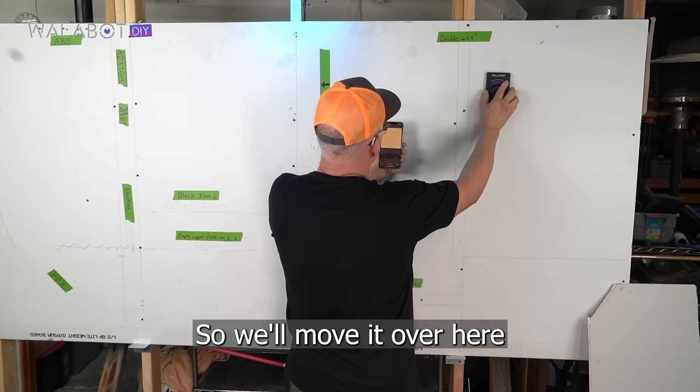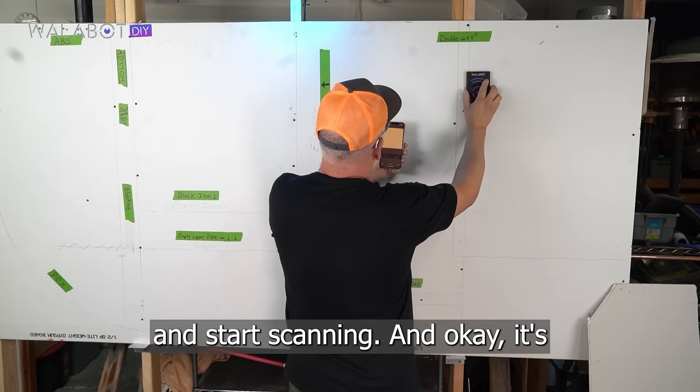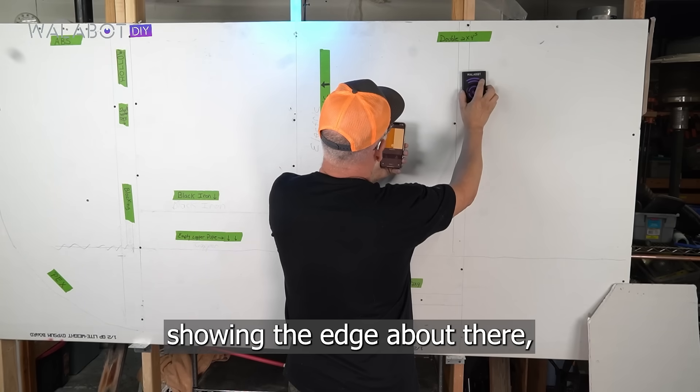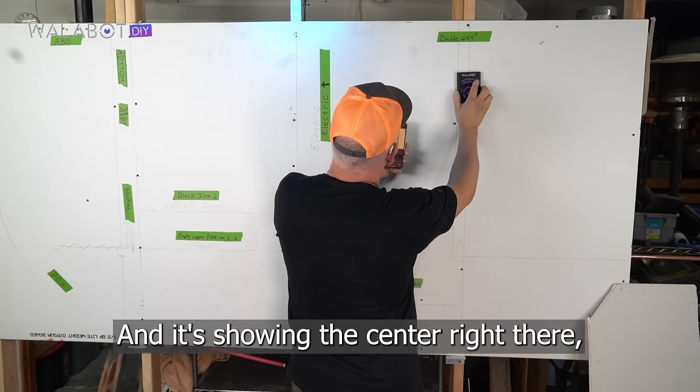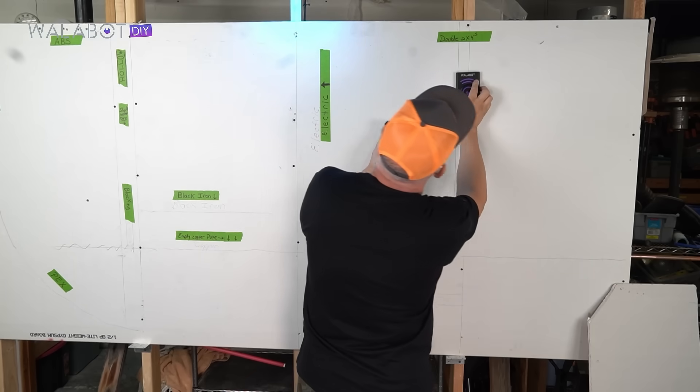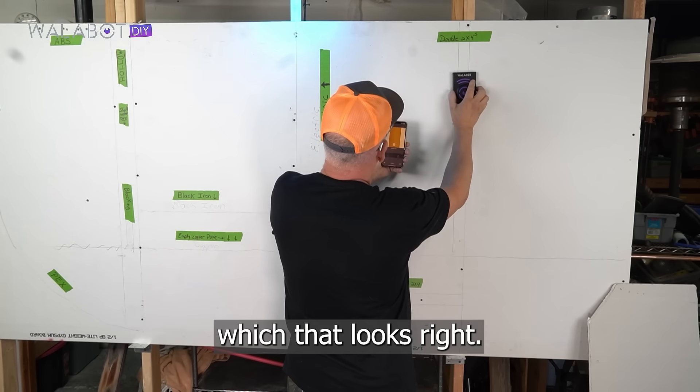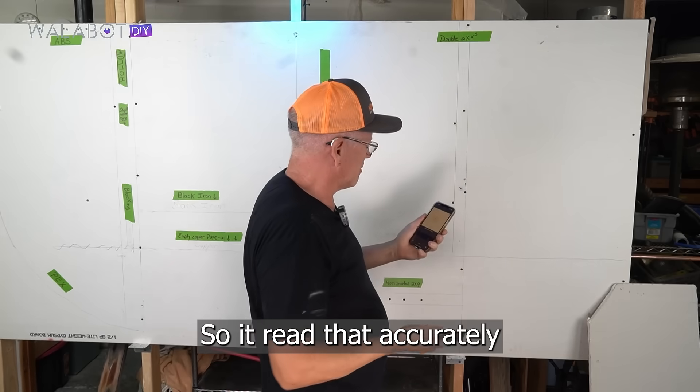So we'll move it over here and start scanning. Okay, it's showing the edge about there, which is right. And it's showing the center right there, which that looks right. So it read that accurately.